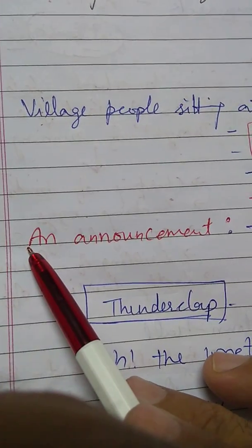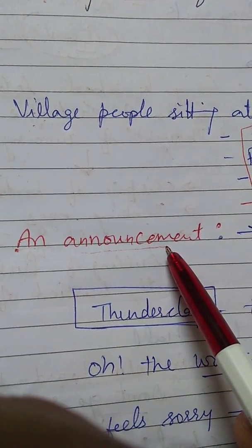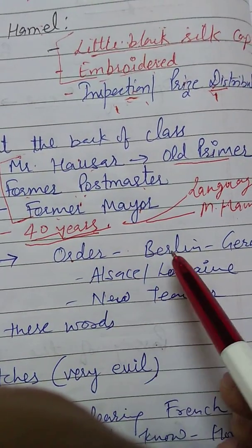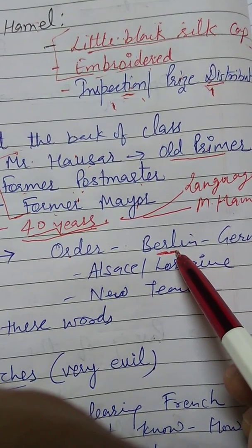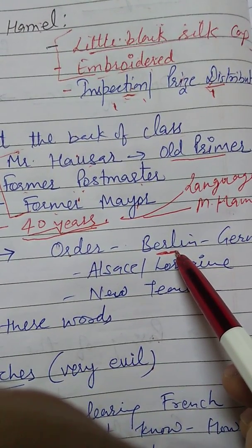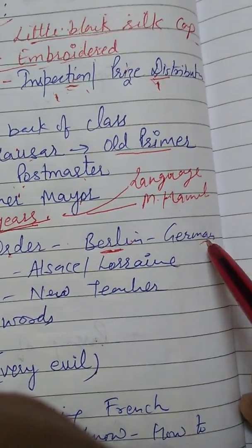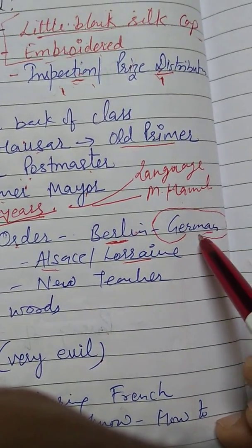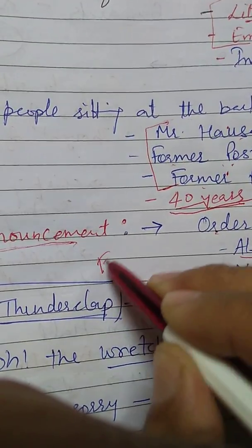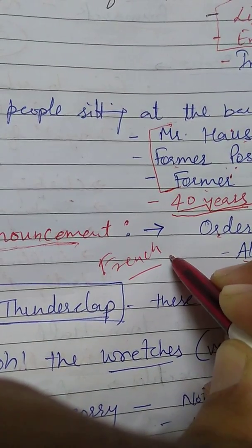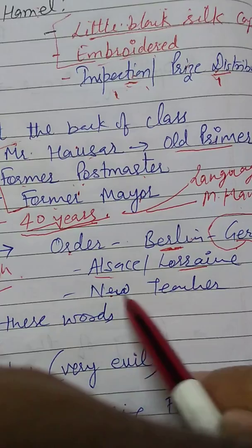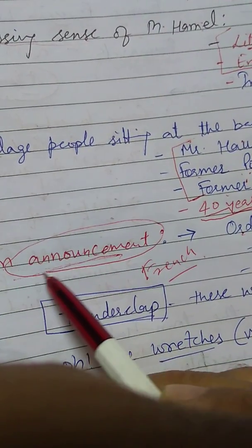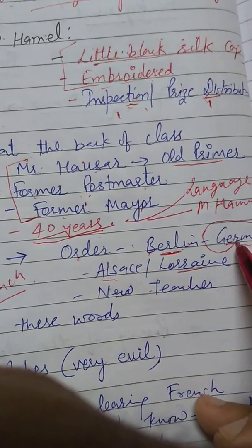The class was about to begin when the teacher left his chair and made an announcement. He said an order has come from Berlin — Berlin being the capital of Prussia at that time — to teach German in all the schools of Alsace and Lorraine. Today is the last lesson of the French language, and tomorrow a new teacher will come. This was the order from Berlin. It was not merely an announcement but an official order to replace French with German.